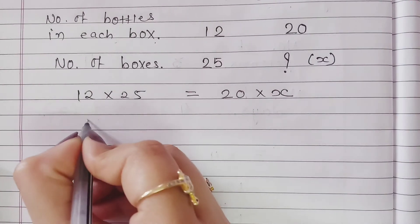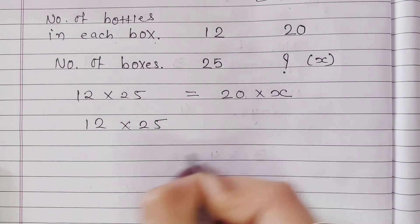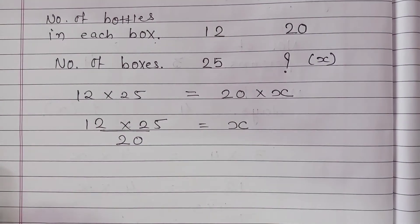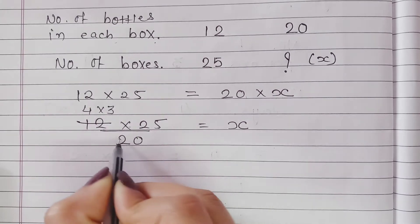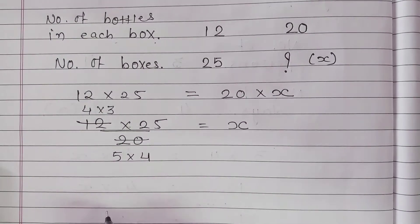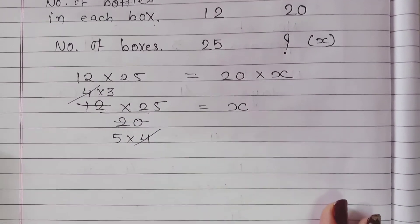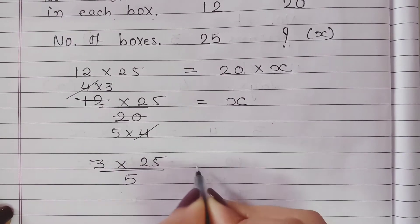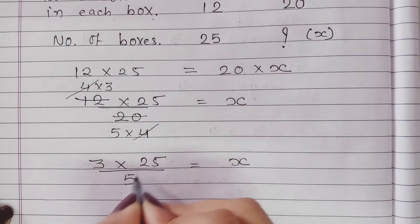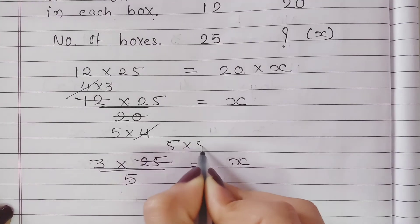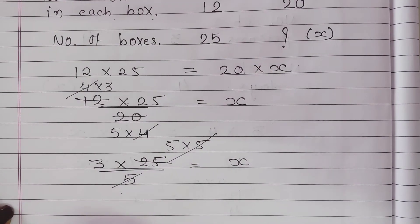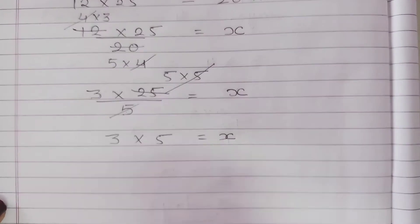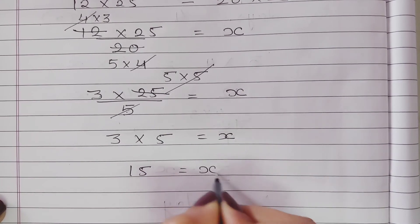Now we will simplify. 12 × 25 = 20 × x. We cancel: 12 and 20 share a factor of 4, giving 3 and 5. So 3 × 25 = 5 × x, which gives 75 = 5x, therefore x = 15.